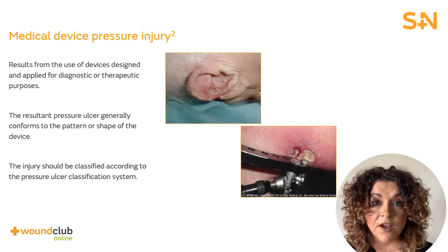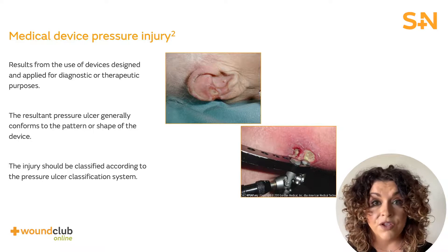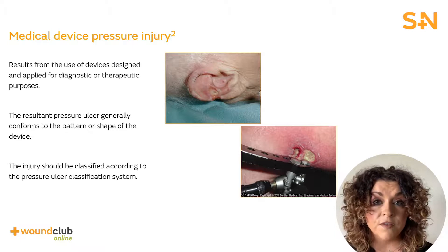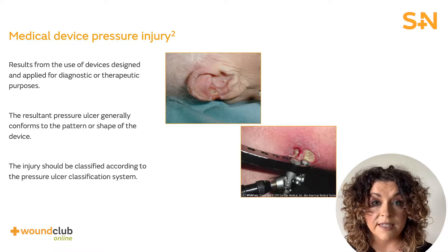Medical device related pressure ulcers result from the use of devices designed and applied for diagnostic or therapeutic purposes, for example urinary catheters or nasal cannula to provide oxygen therapy. They often present in the same shape or pattern as the device. Any injury incurred should be classified in the normal way with the cause of the ulcer documented.